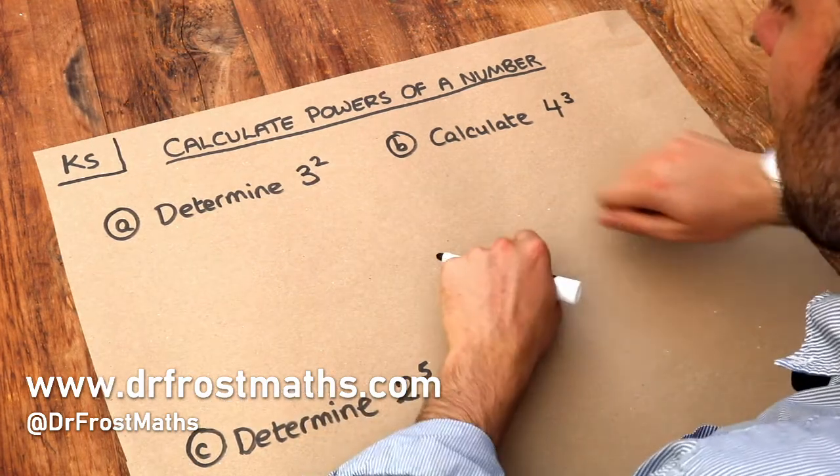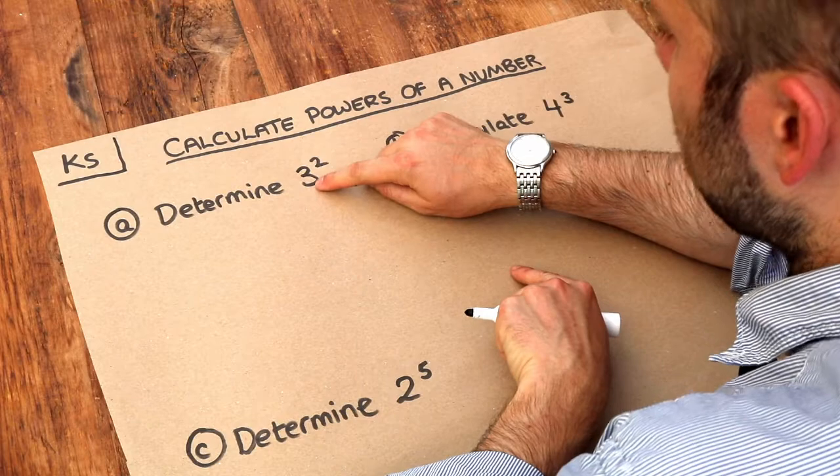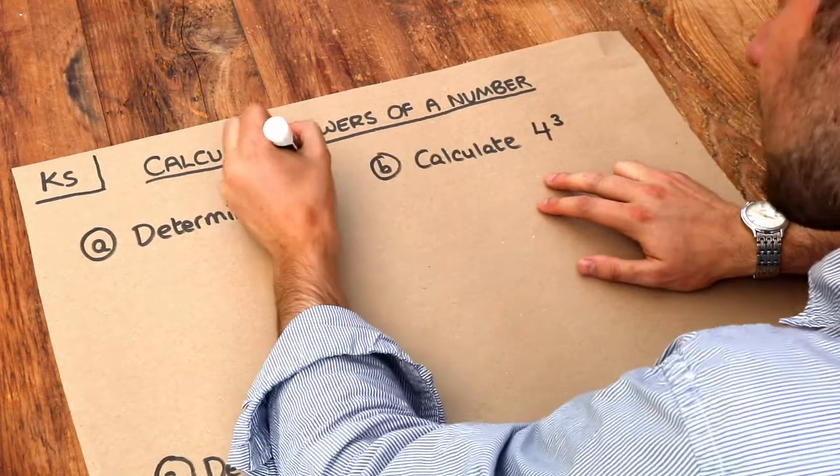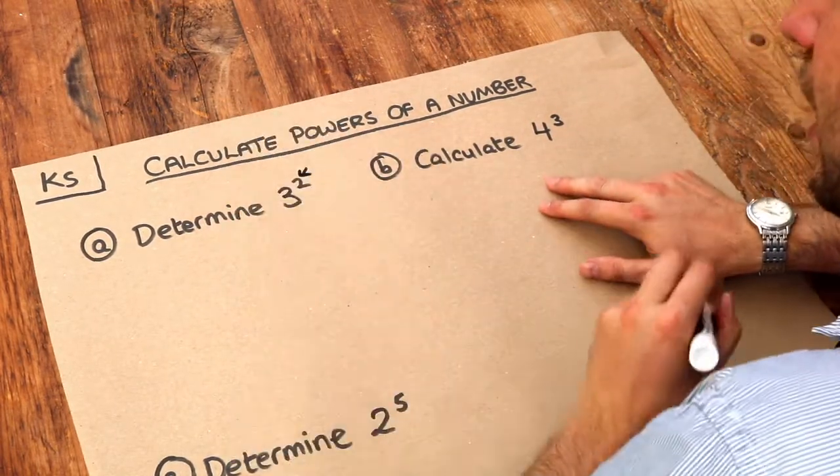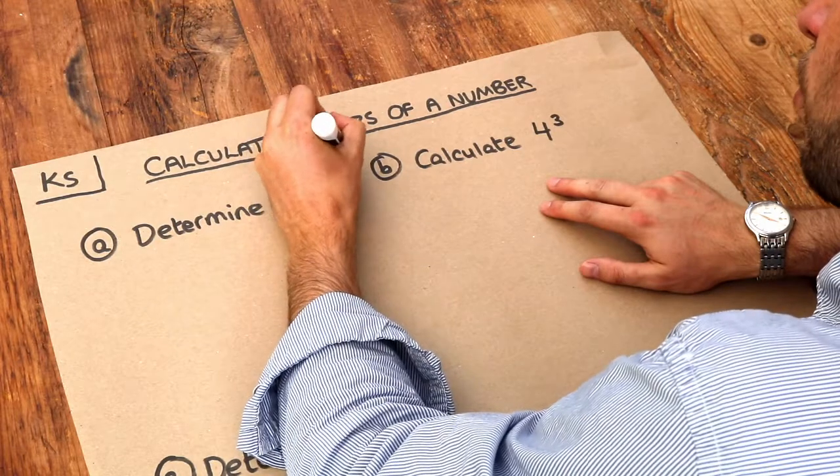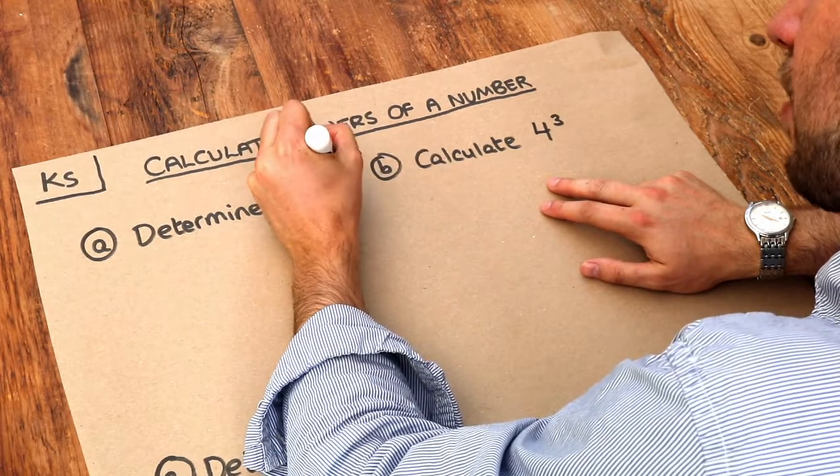Now a power is when we have a small little number to the top right of the main number. And this little number up here is known as the index or the exponent, that's the posh name.